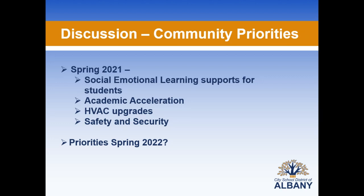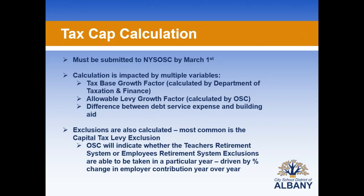Turning to the tax cap calculation: it must be submitted to the state comptroller's office by March 1st. The calculation is impacted by multiple variables — the tax-based growth factor determined by the Department of Tax and Finance, the allowable levy growth factor which was calculated by the state comptroller's office to be two percent, the difference between debt service expense and building aid, and exclusions. The most common exclusion is the capital tax levy exclusion; the OSC determines whether TRS or ERS exclusions are available in a given year based on the rate of increase in employer contribution year-over-year, and those have not been available for quite some time.